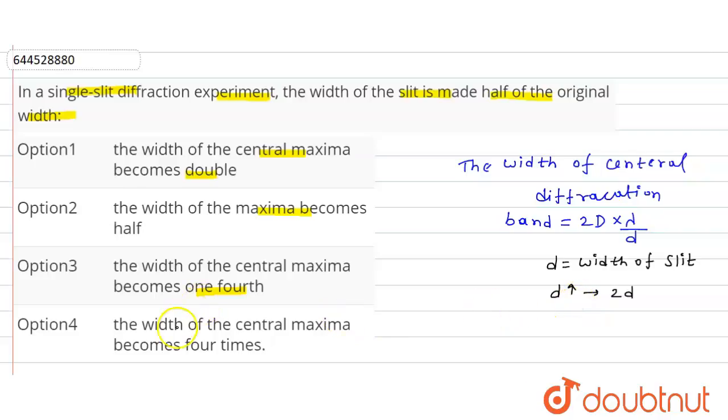Our option will be the width of the central maxima becomes - here the width of the central maxima becomes half. The width of the central maxima becomes double, the width of the central maxima becomes half.